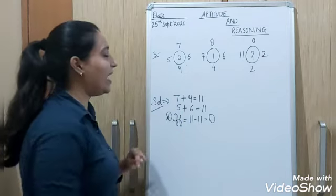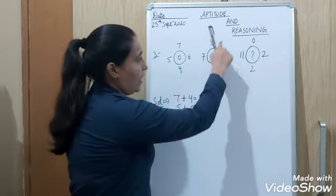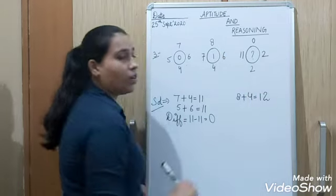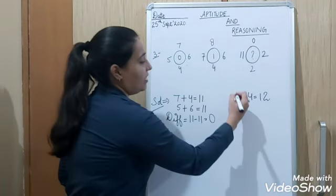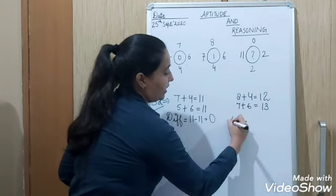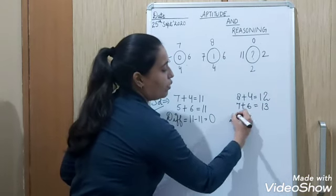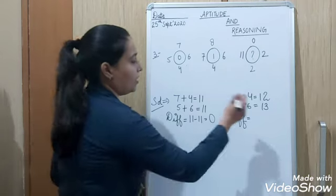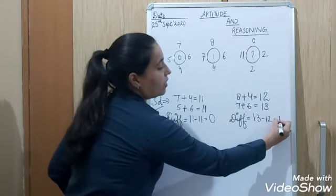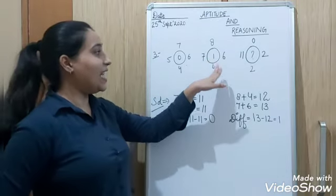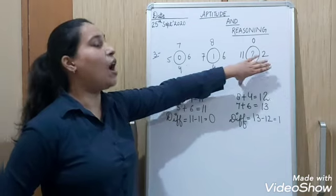Now see the second circle. 8 plus 4 is what? 12. And then 7 plus 6 is what? 13. Now difference. To find the difference you simply subtract the smaller number from the larger number. So 13 minus 12 is 1. That's why you get 1. So you got 1.